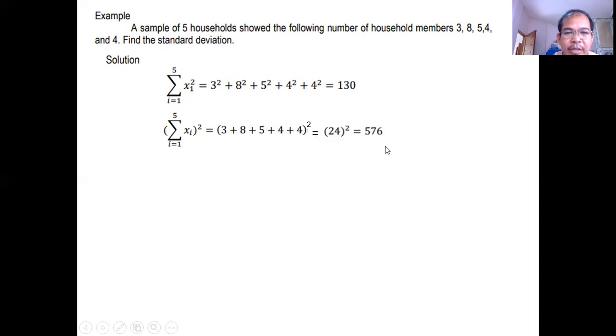E-substitute na lang sa formula. Ang n is 1, 2, 3, 4, 5. So 5 times, the answer of this is 130. So 5 times 130 minus 576 equals 74. Over 20. Why? 5 times 5 minus 4. So 5 times 4 is 20. So 74 divided by 20, then take the square root, it's 1.92.